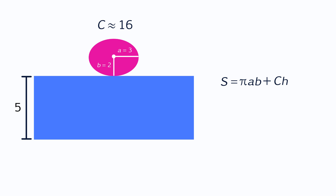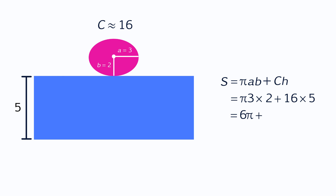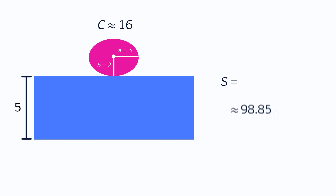In this case, you have a cylinder whose elliptical base has a semi-major axis A equal to 3 and a semi-minor axis B of 2. The circumference is approximately 16, and the height of this cylinder is 5. Inserting A equals 3, B equals 2, C equals 16, and H equals 5, you get pi times 3 times 2 plus 16 times 5. 3 times 2 is 6, and 16 times 5 is 80. You're left with 6 pi plus 80, which is approximately 98.85. The total surface area of this elliptical cylinder is around 98.85.